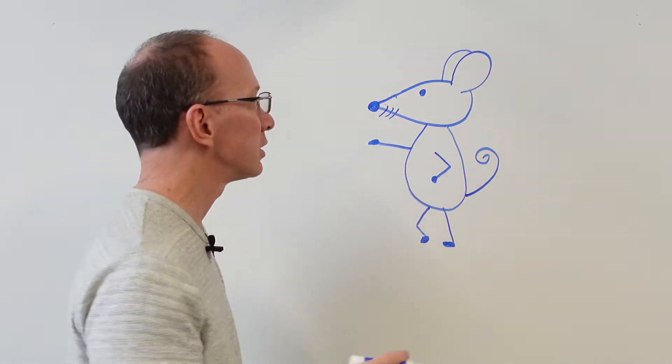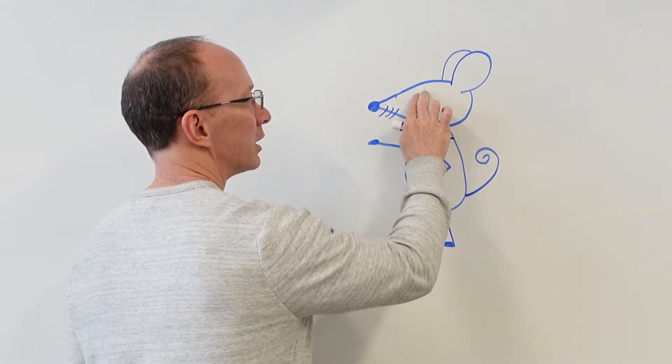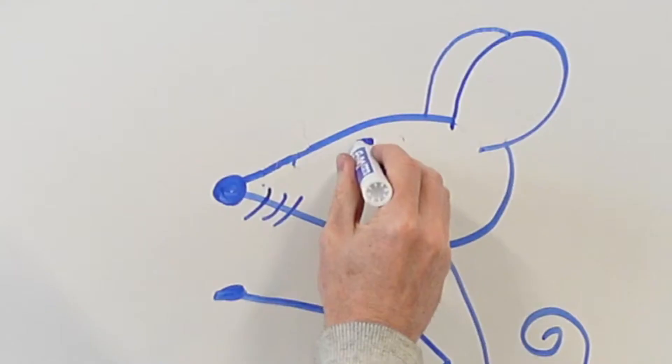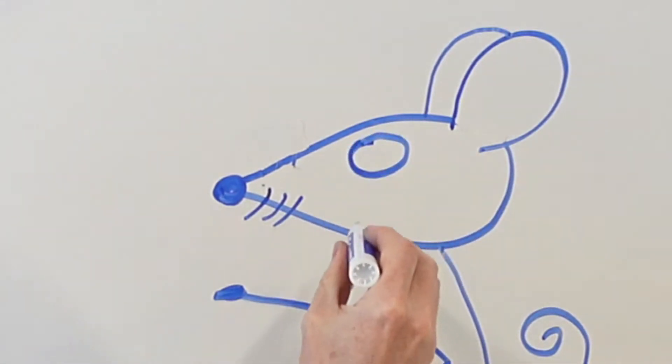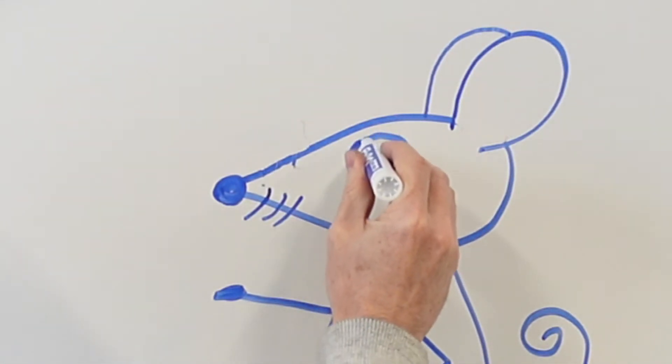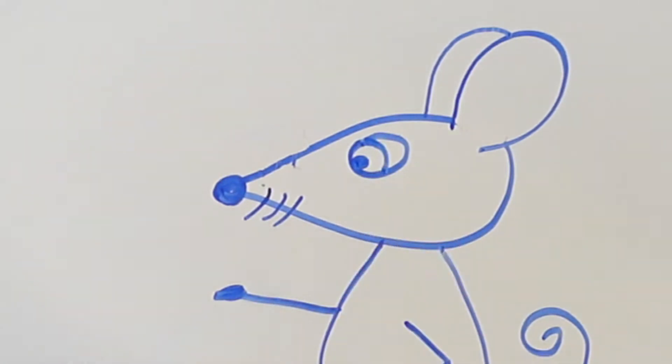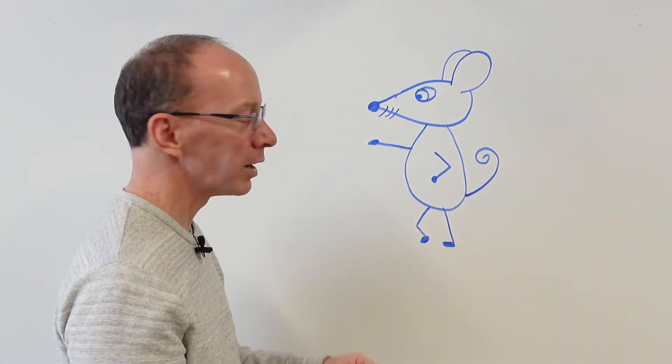Another variation on this mouse that if you wanted to do is do the cartoon eye. And that's a bigger eye like this, the pupil, and then an eyelid like that.